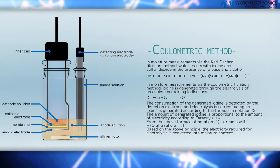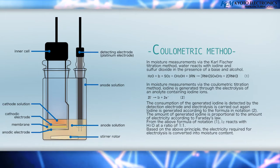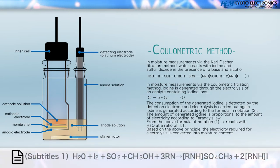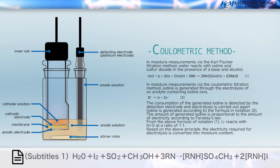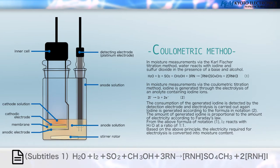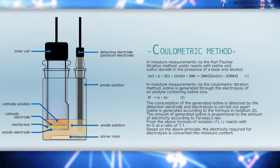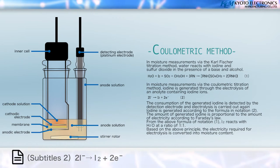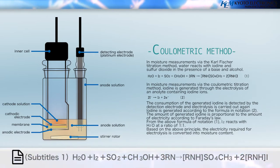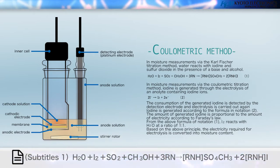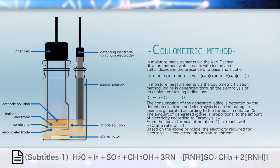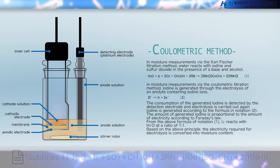In moisture measurements via the Coulometric Titration Method, iodine is generated through the electrolysis of an analyte containing iodine ions. The consumption of the generated iodine is detected by the detection electrode, and electrolysis is carried out again. Iodine is generated according to Faraday's law, where the amount of generated iodine is proportional to the amount of electricity. From this, I2 reacts with H2O at a ratio of 1 to 1, and the electricity required for electrolysis is converted into moisture content.